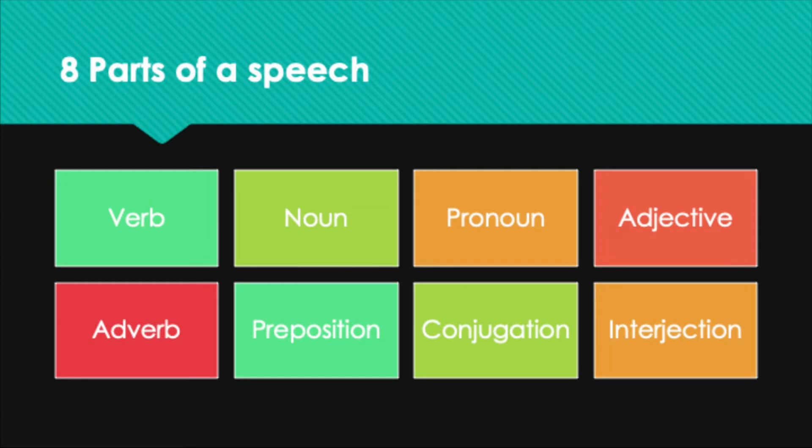Let's get going with the eight parts of speech. You see the eight parts of speech listed here. These are verb, noun, pronoun, adjective, adverb, preposition, conjunction, and interjection. It's not that important that you memorize all of these terms. You can always come back to this lesson or glance at your notes, but I'm going to go through each of these parts of speech and talk about their functions and how they work in an English language sentence.